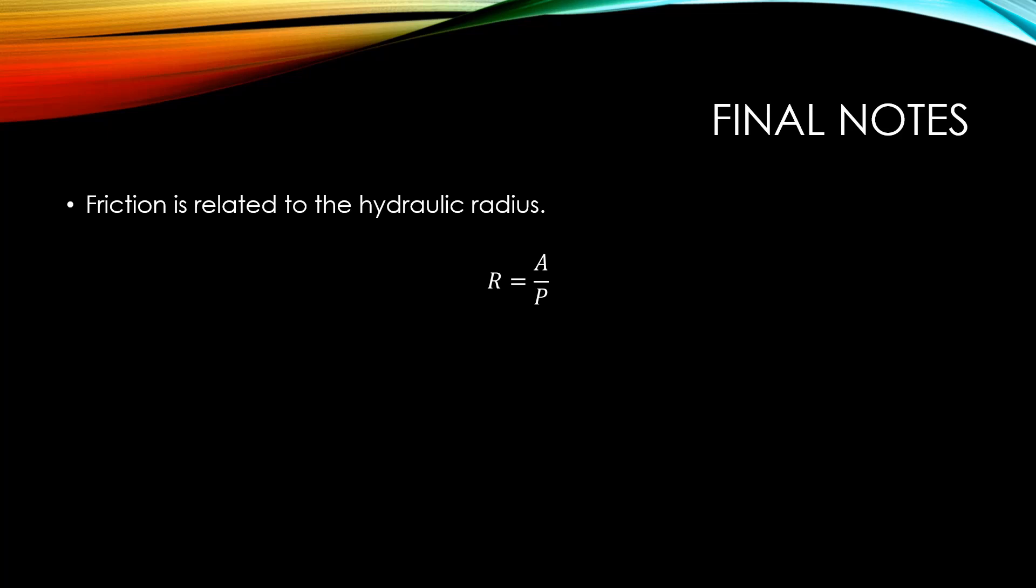Let's also remember that when we're talking about geometric properties, P represents the wetted perimeter, and not pressure.